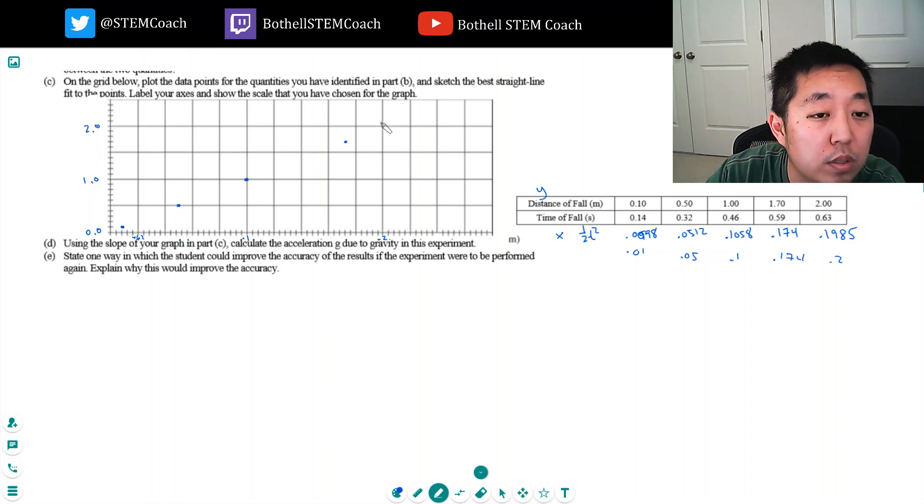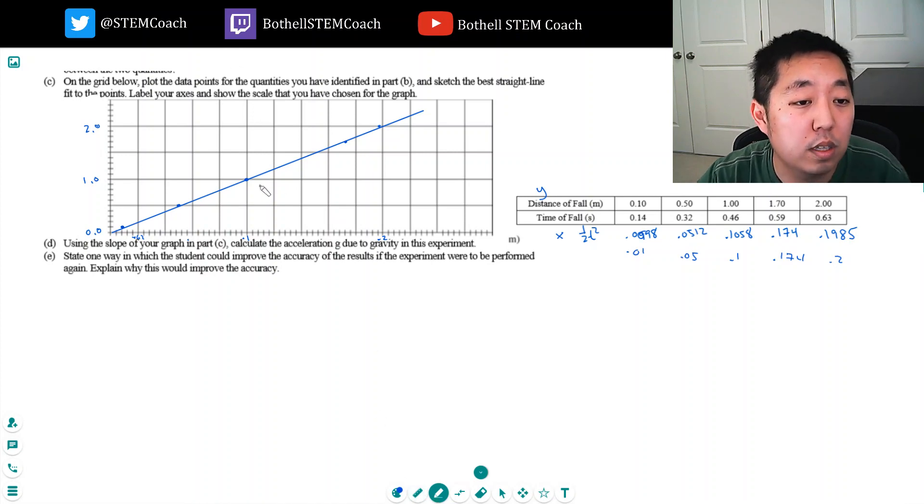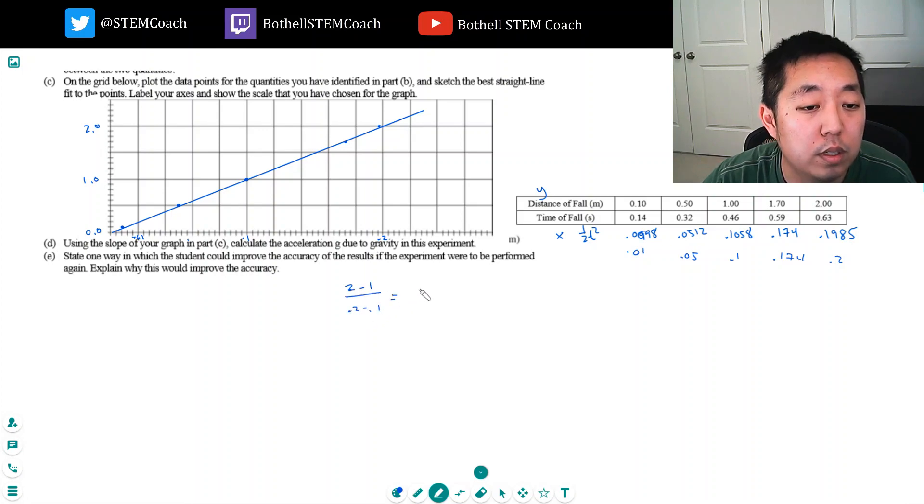Now I'm going to take advantage of the fact that I have this thing. It's really hard to draw. Okay, that's a pretty good line. What's the slope? You can use any two points and compute the slope. I made it go through here, 0.1 and 1, and then it goes through here about 0.2 and 2. So I'm going to do 2 minus 1 over 0.2 minus 0.1, which is 1 over 0.1, which is 10 meters per second squared.